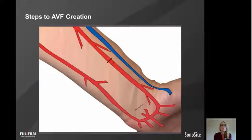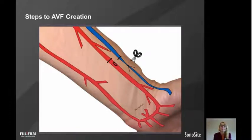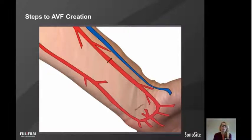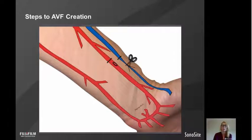To create an arteriovenous fisture, the surgeon makes an incision at the point where he wants to join the artery and the vein, clamps both, creates a small incision in the artery, ties off the distal end of the vein and cuts it, then joins that end onto the surgical hole. The vein and artery are sewn together, the clamps released, flow is monitored for leaks, and the skin is sutured.